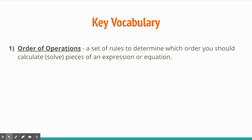Key vocabulary: order of operations is a set of rules to determine which order you should calculate or solve pieces of an expression or an equation. The word 'order' refers to the format that you're going to do this, and 'operations' really just stands for addition, subtraction, multiplication, and division — it is what order you do these in.